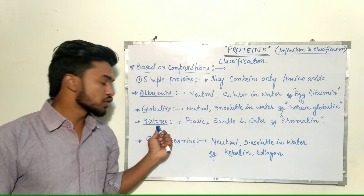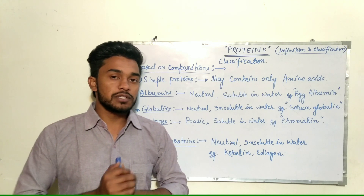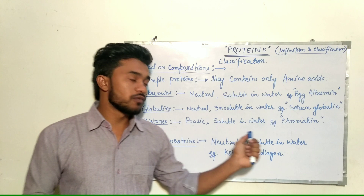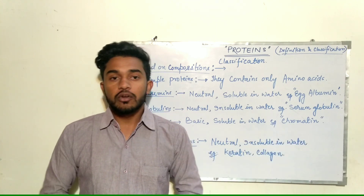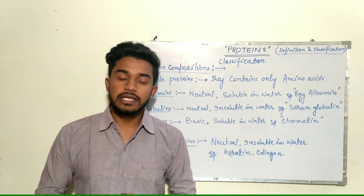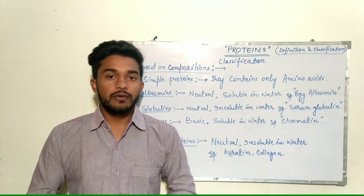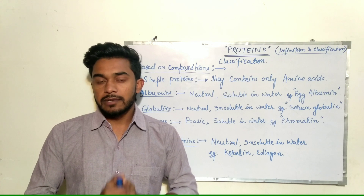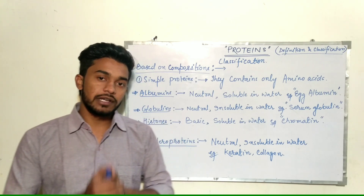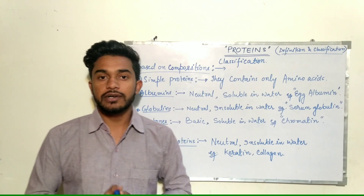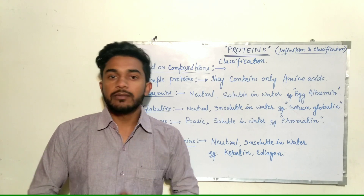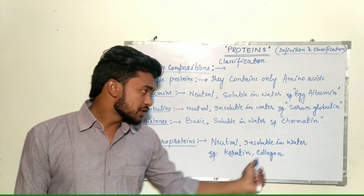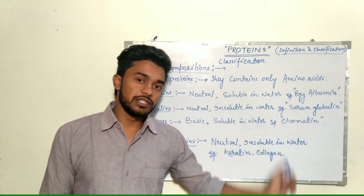Histone proteins are very important proteins. They are basic in nature and soluble in water. An example is chromatin. Histone proteins are required for binding and organization of DNA in eukaryotic cells and higher organisms. Scleroproteins are neutral in nature, insoluble in water — examples are keratin and collagen.